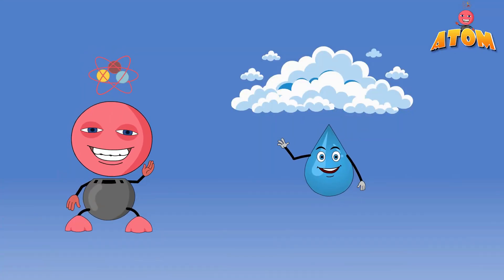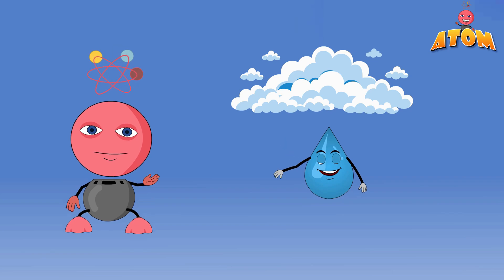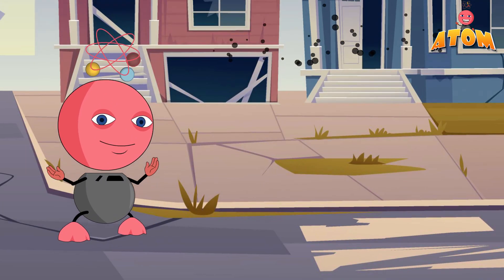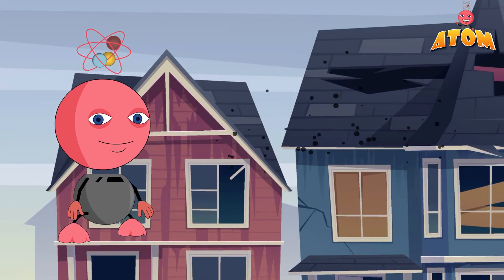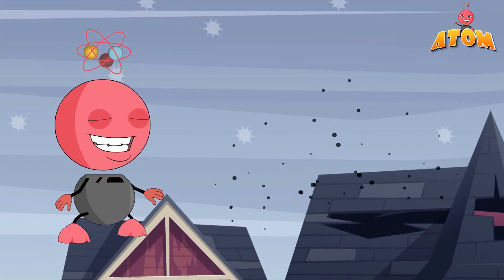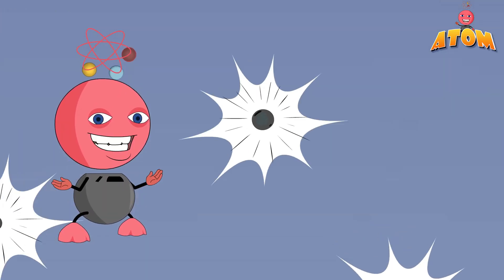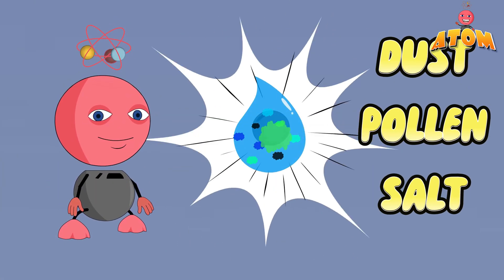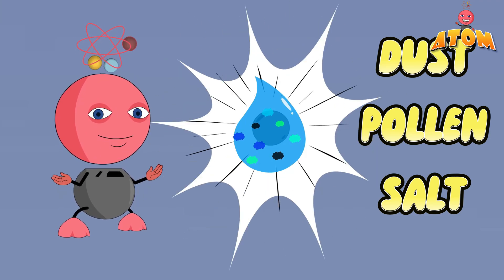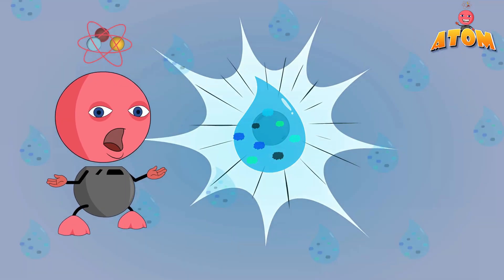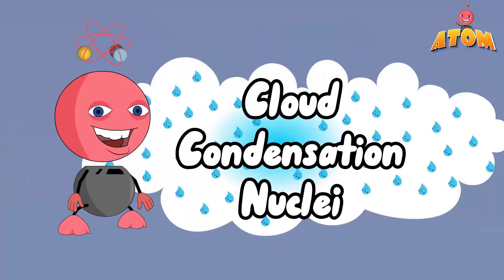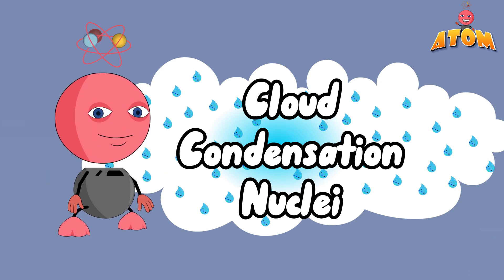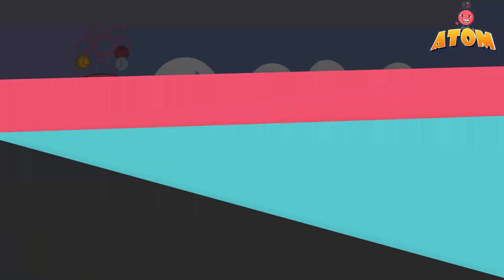Now let's zoom in on how raindrops are formed. Interestingly, each raindrop needs a tiny helper to come into existence. These helpers are microscopic particles like dust, pollen, or even a bit of salt. Without these particles, known as cloud condensation nuclei, water vapor would have a hard time condensing into liquid.